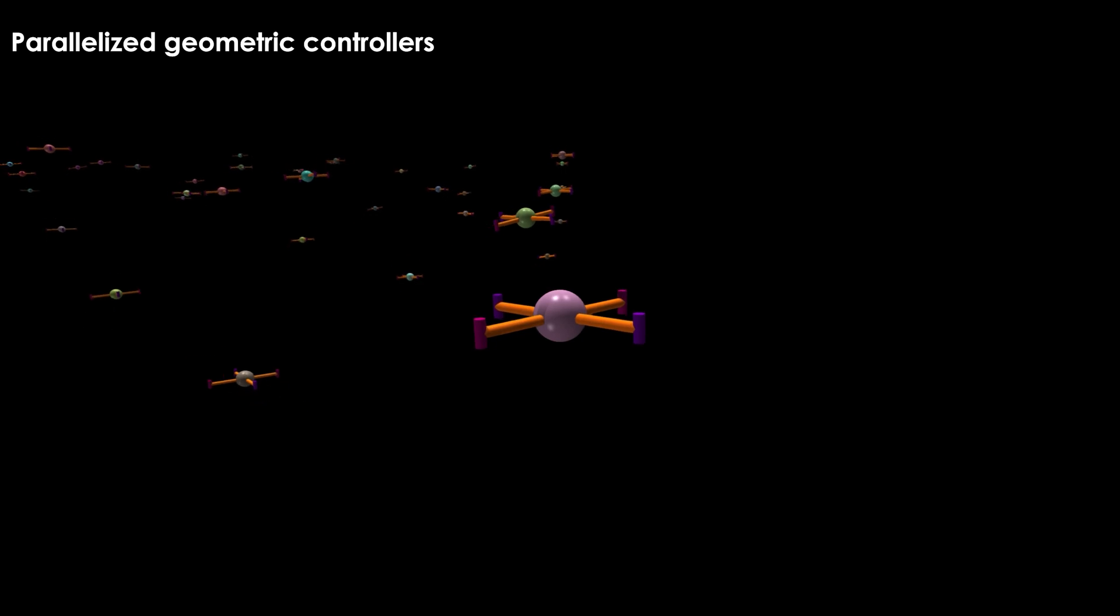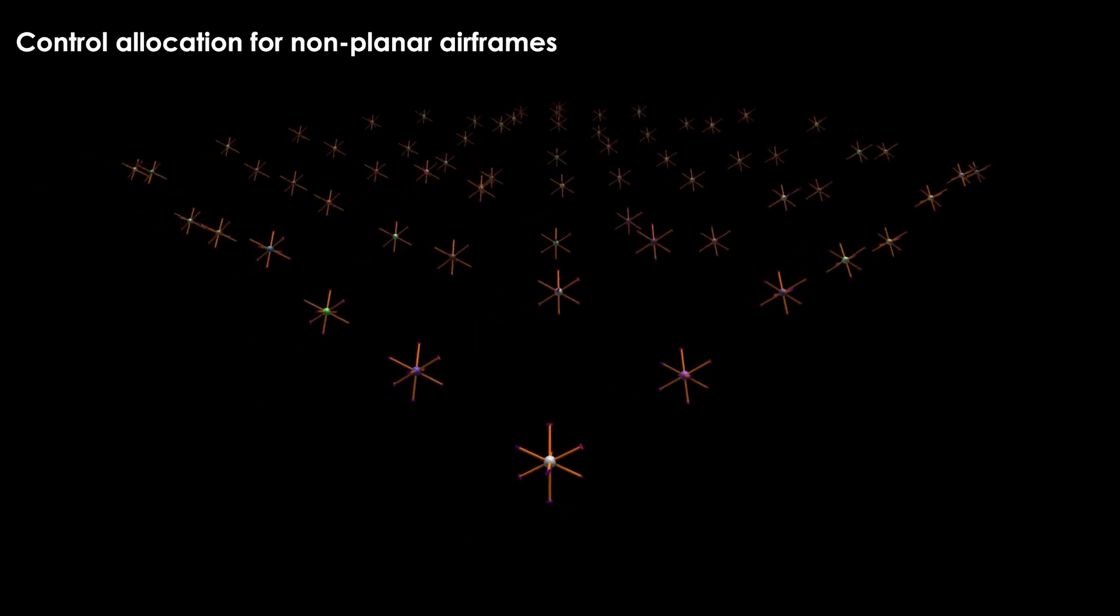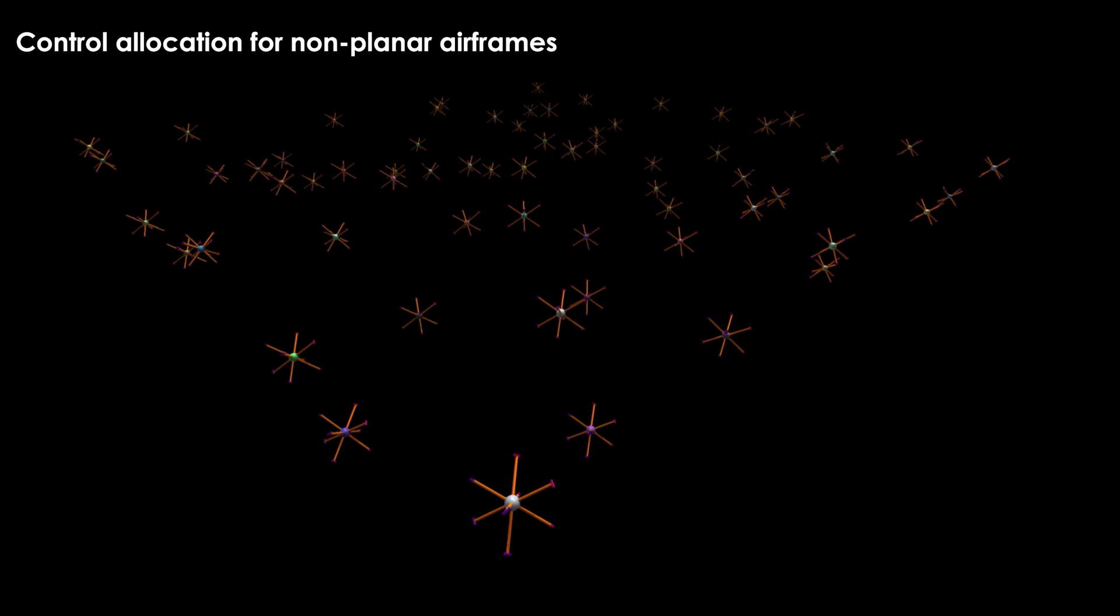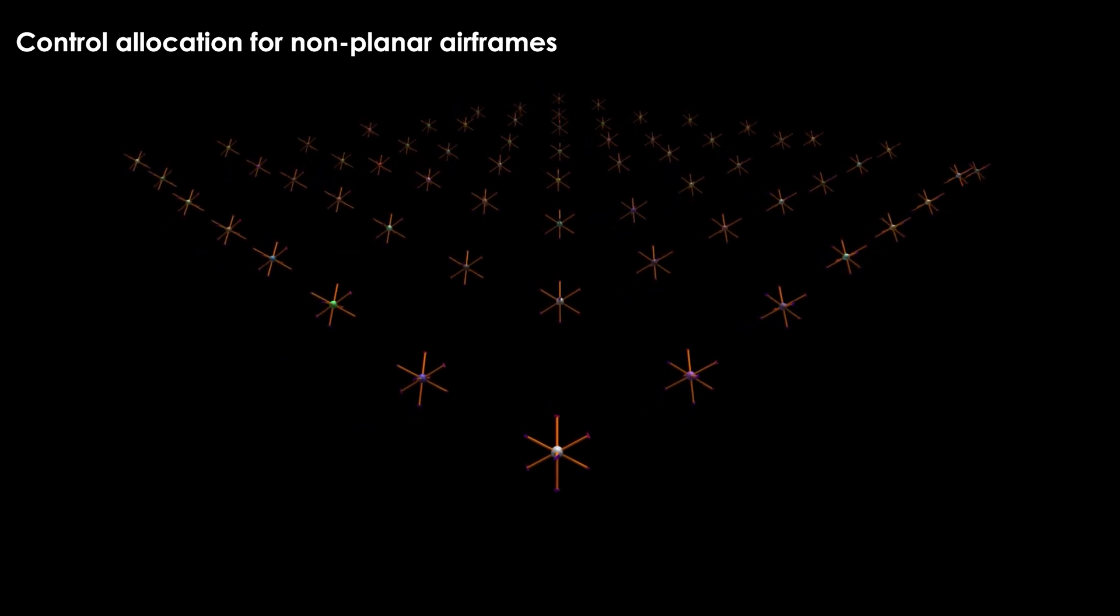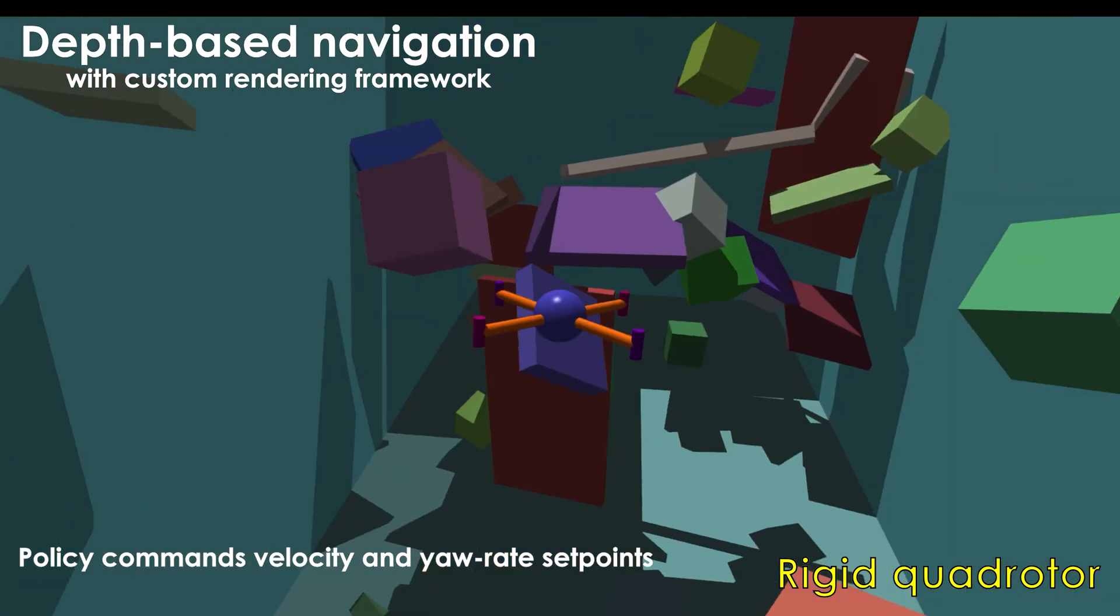Parallelized geometric controllers are provided that imitate real-world interfaces, allowing tight coupling of learning algorithms with real-world robot controllers. We also provide a control allocation scheme for non-planar configurations to jump-start training for arbitrary airframes.